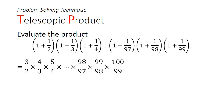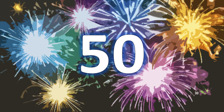For example, in the first term we have 3 in the numerator — this cancels with the 3 in the denominator of the second term. Similarly, 4 will cancel with 4, and so on, all the way till 99. You'll see that there are only 2 numbers left: 100 in the numerator and 2 in the denominator. So we get 100 over 2, which is 50.